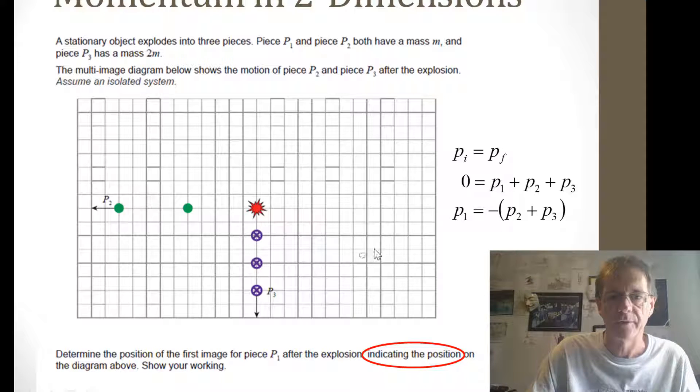So we need to add those two together first the P2 and the P3 and we've gone over twice as many images because piece P3 has got a mass of 2m so you go over twice as many images do those tip to tail like that that's the way P2 plus P3 is going to be we need to go opposite to that for piece P1 so piece P1 starts there it's got to go that way in the opposite direction to that distance obviously.